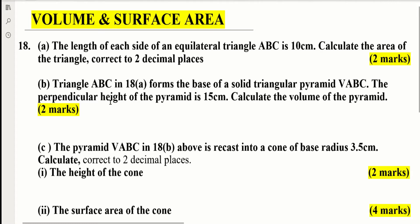The pyramid VABC in 18B above is recast into a cone of base radius 3.5 cm. Calculate, correct to two decimal places: one, the height of the cone, two marks; two, the surface area of the cone, four marks.